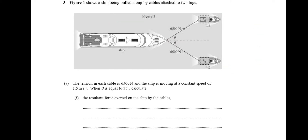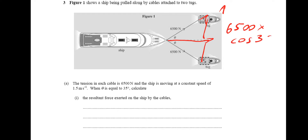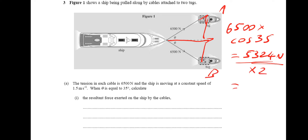What we're interested in is the horizontal force. Making a triangle, the horizontal force for tugboat A is the magnitude — 6,500 — multiplied by cos of the angle, which is 35, giving 5,324 newtons. Tugboat B is doing the exact same thing, so we times this value by 2, which gives 10,649 newtons.